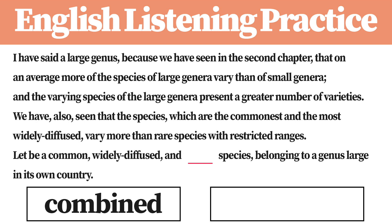I have said a large genus, because we have seen in the second chapter, that on an average more of the species of large genera vary than of small genera, and the varying species of the large genera present a greater number of varieties. We have, also, seen that the species, which are the commonest and the most widely diffused, vary more than rare species with restricted ranges. Let be a common, widely diffused, and varying species, belonging to a genus large in its own country.